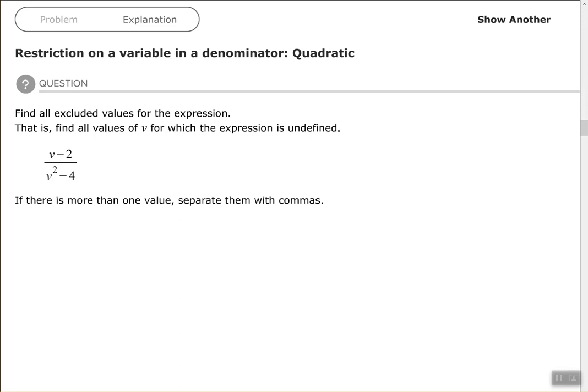We want to still find the excluded values for the expression, so the process is the same. We look at our denominator, take our denominator, set it equal to zero and solve. However, if it is a quadratic expression, then whether I have to factor and solve or use the quadratic formula, I would do something to solve this, which hopefully all of these should be easy enough to factor. So factoring is not going away, please remember to practice on your factoring.